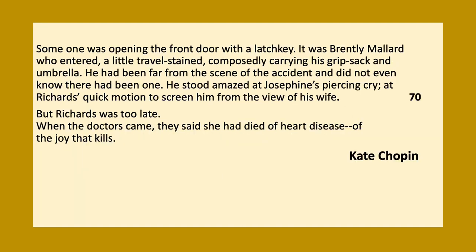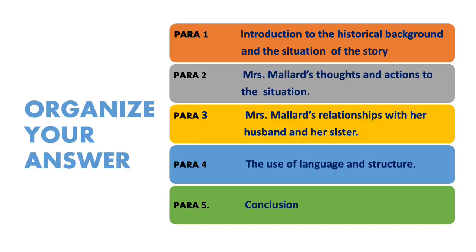Now let's see how we should organise the answer. You can organise your answer in five paragraphs. Paragraph 1 should be the introduction to the historical background and the situation of the story. Paragraph 2 should contain Mrs. Mallard's thoughts and actions. Paragraph 3 should be Mrs. Mallard's relationships with her husband and her sister. In paragraph 4 you need to analyse the language and structure employed by the writer, and then you can wrap up with a brief conclusion.